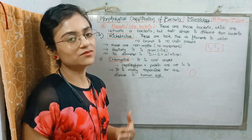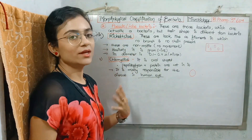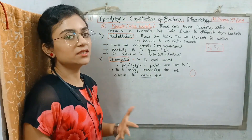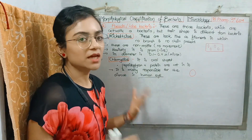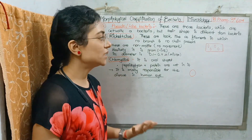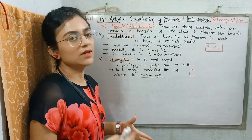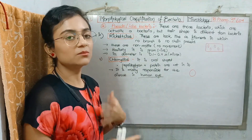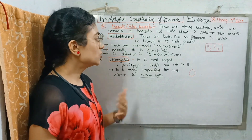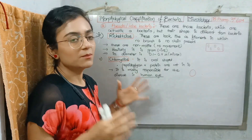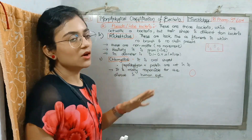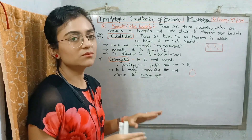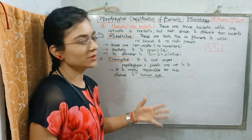The next pseudobacteria is Rickettsia. Rickettsia generally looks like filaments but it doesn't have any branch form or chain form. It is not motile — it doesn't have movement. It is basically gram-negative bacteria and its diameter is 0.1 to 0.4 microns.